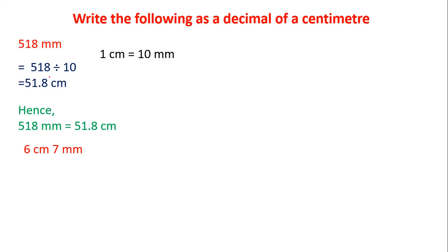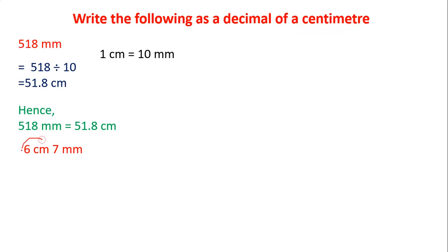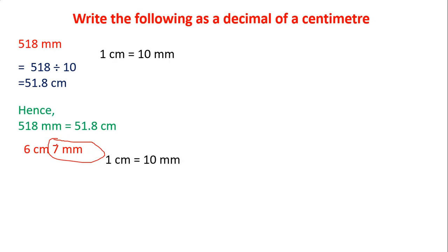Let's take the next problem: 6 centimeters 7 millimeters. We have to convert these two units into centimeters. The 6 centimeters is already in centimeters, so we do not convert it. We only need to convert 7 millimeters. Since 1 centimeter equals 10 millimeters, we are converting a smaller unit to a larger unit, so we divide 7 millimeters by 10.